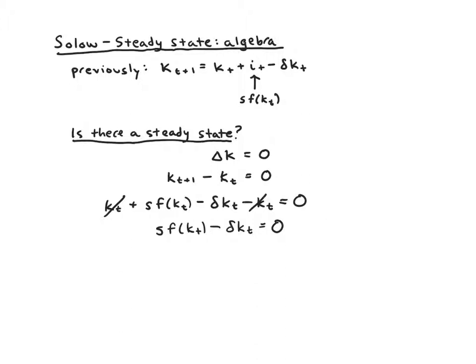This simplifies to s·f(k_t) minus delta·k_t equals zero, which is our steady state condition. Rearranging by moving delta·k_t to the right-hand side gives us s·f(k_t) equals delta·k_t. The left-hand side is investment — new capital being added — and the right-hand side is depreciation — capital being lost. In a steady state, new capital and lost capital cancel out so there's no overall change.